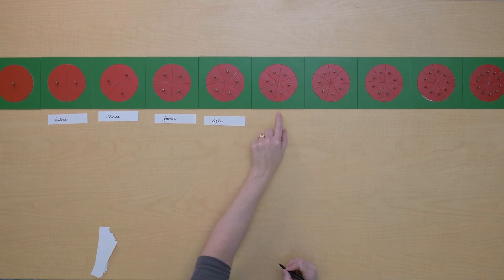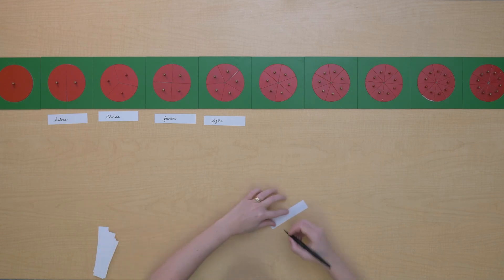Here we have a unit with six equal pieces. That's sixths.